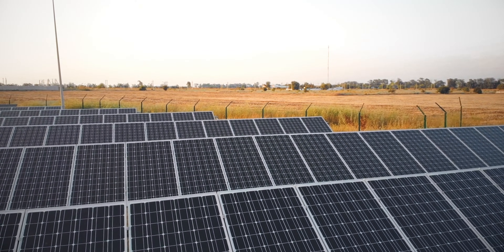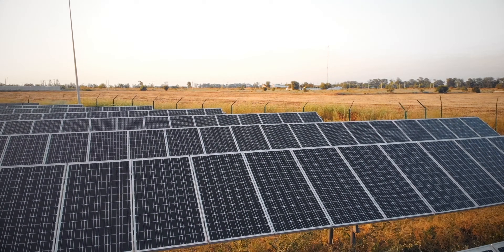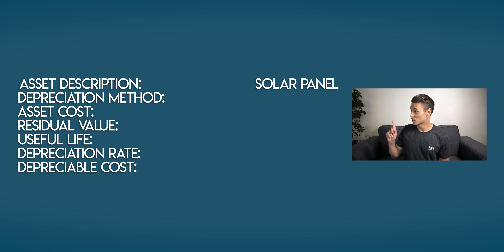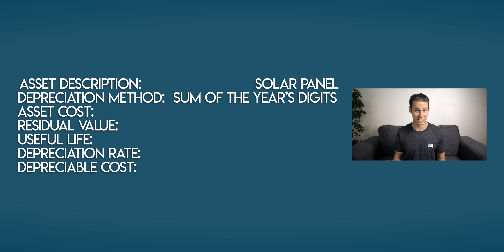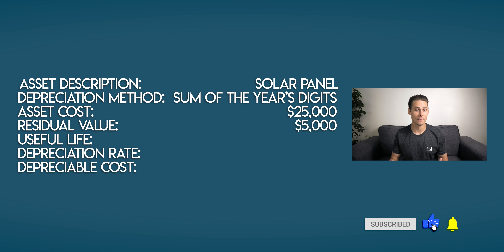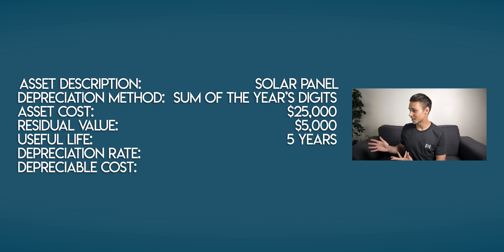Let's depreciate one of these panels using the sum of the year's digits method. Step one: write down what you know. Your asset is a solar panel. Asset cost — what you initially paid for it — is $25,000. Its residual value at the end of its useful life is $5,000, and its useful life is 5 years.